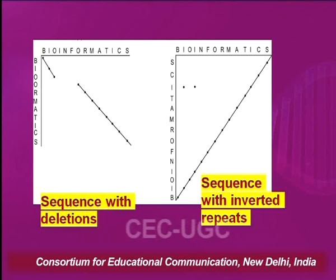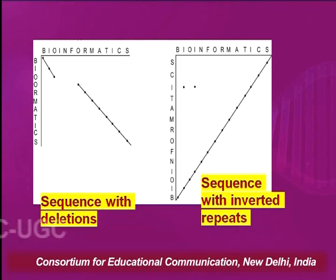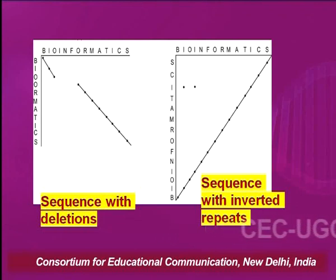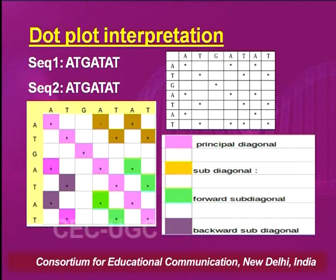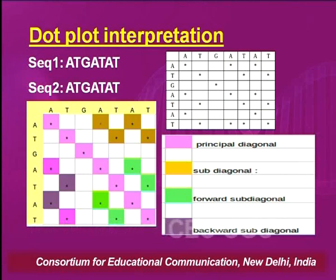The dot plot gives a lot of information about functional aspects. If we get a reverse diagonal, it tells us that there are inverted repeats in the sequence — that one sequence is the reverse repeat of the other. For example, if I did this again for two sequences, one in the column and one in the row, I got four types of plots: a principal diagonal, sub-diagonals, a forward sub-diagonal, and a reverse sub-diagonal.